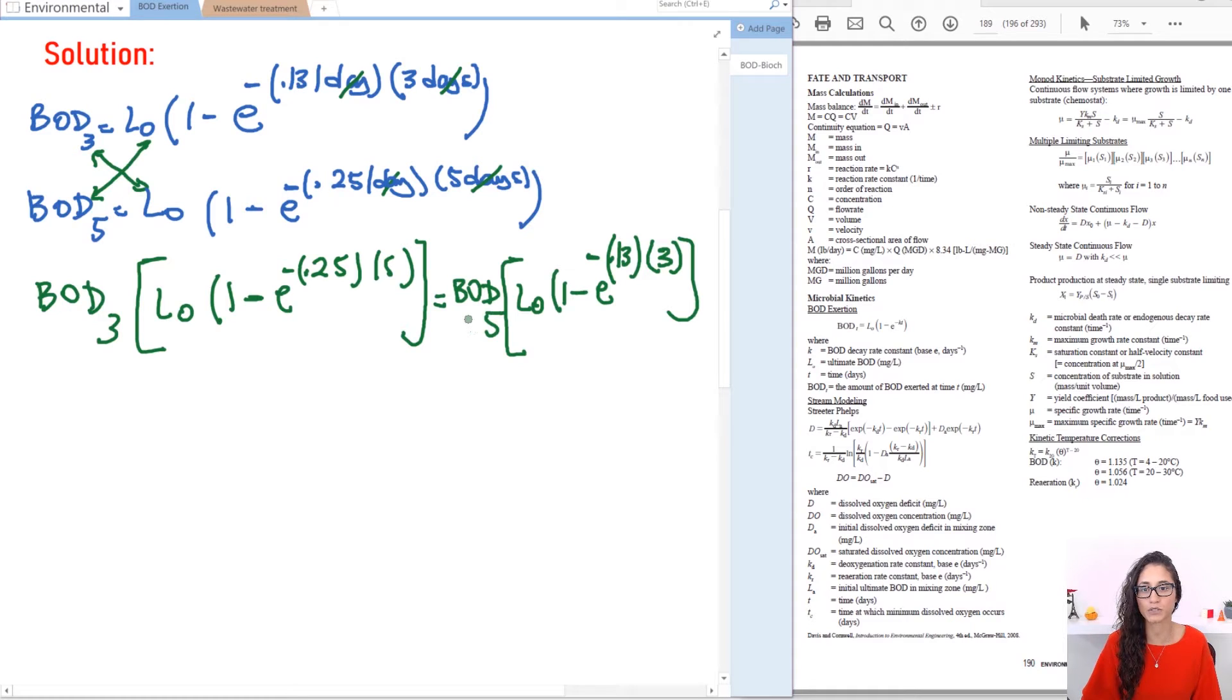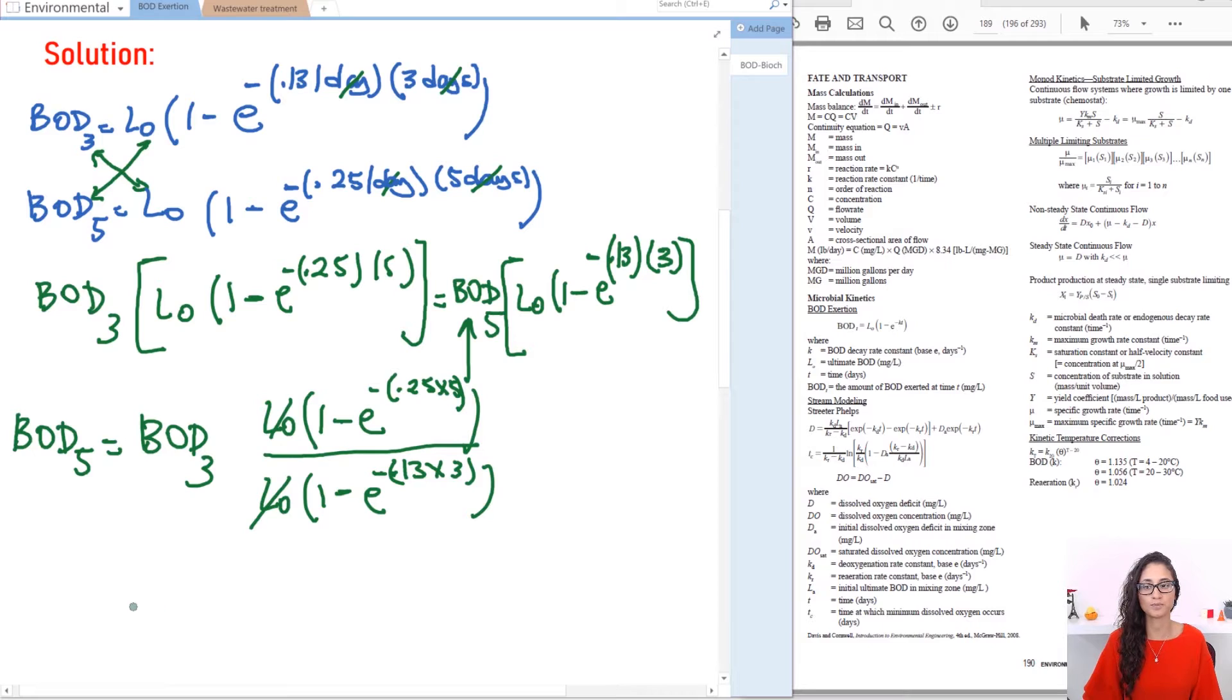Okay so the next thing we can do is try to solve for BOD five so let's rearrange this equation and solve for this term. So we have BOD five is equal to so I have BOD three and then I have L0 times 1 minus E to the power of minus 0.25 times five divide that by L0 times one minus E to the power of minus 0.13 times three. So this term cancels with this term and now I have BOD which is 100 milligrams per liter L0 times one minus E to the power of minus 0.25 times five and then divided by one minus E to the power of minus 0.13 times three.